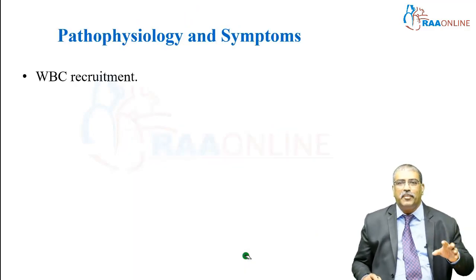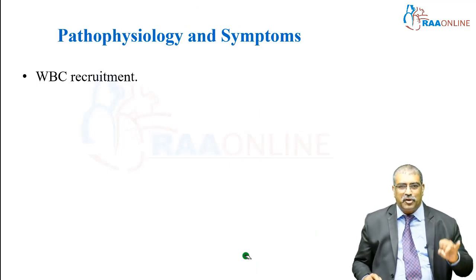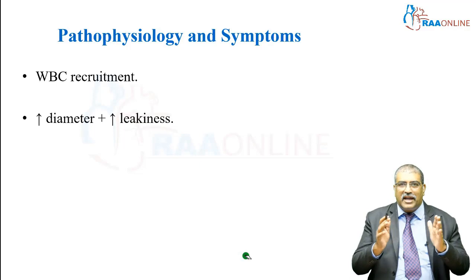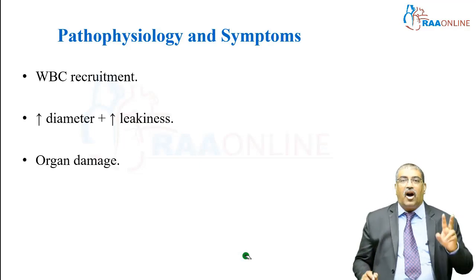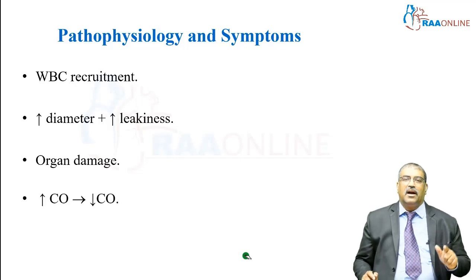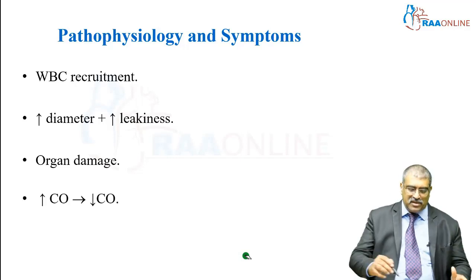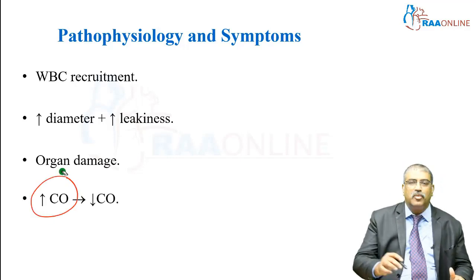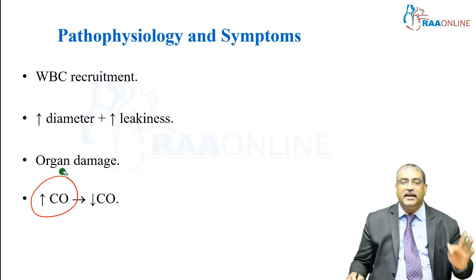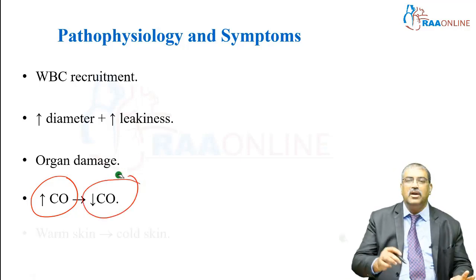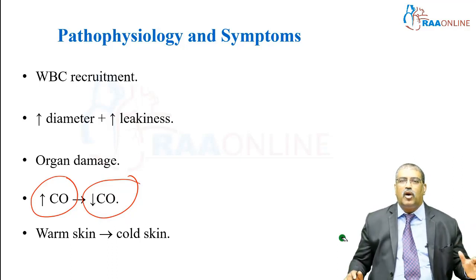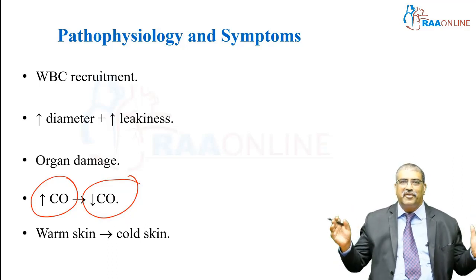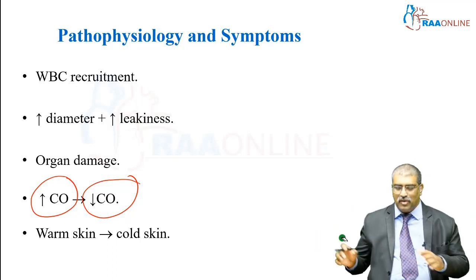Coming to the pathophysiology and symptoms: there is going to be WBC recruitment, the vessel wall diameter increases, and there is going to be increased leakiness, leading to organ damage. Initially in sepsis, there will be high cardiac output and tachycardia, and in the later stage, cardiac output comes down. The skin changes from warm skin due to peripheral vasodilation to cold skin in later stages.